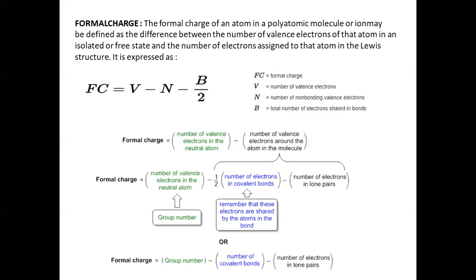Formal charge: the formal charge of an atom in a polyatomic molecule or ion is defined as the difference between the number of valence electrons of that atom in an isolated state and the number of electrons assigned to it in the Lewis structure. The formula is: Fc = V − N − B/2, where Fc is formal charge, V is number of valence electrons, N is number of non-bonding valence electrons (lone pairs), and B is the total number of electrons shared in bonds.